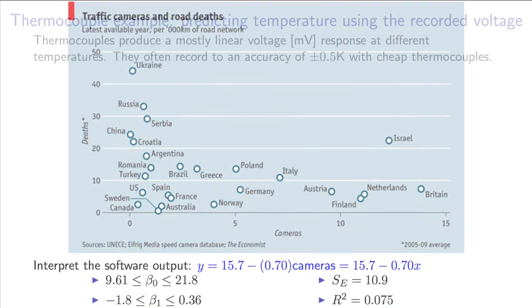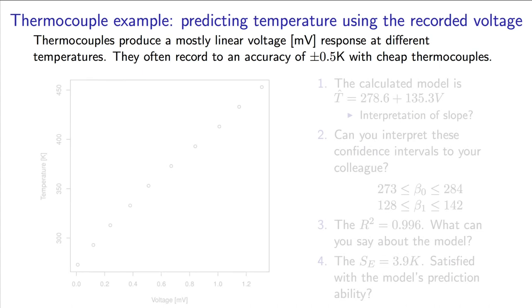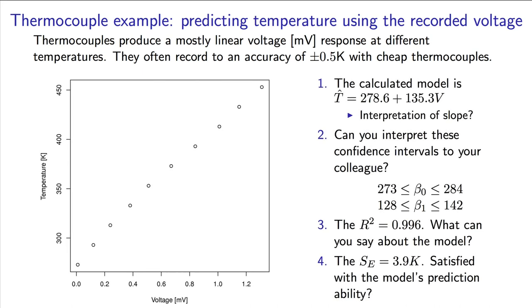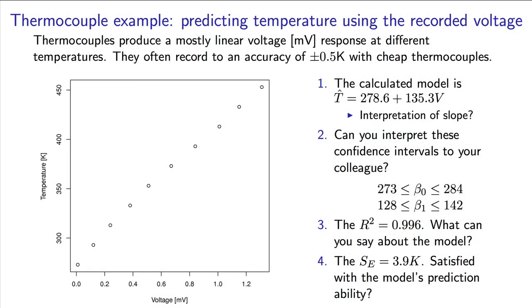Let's take a look at one final example. This is data that is used to predict the temperature from a thermocouple. The thermocouple measures a voltage, and that voltage is then used to predict the temperature. Most thermocouples are accurate to plus or minus half a degree, even on cheap thermocouples. So when we build this model, the r-squared value is 99.6%, extremely high. You'd be very happy with an r-squared value that high in any lab reports or experimental work that you've done up to this point in your career.